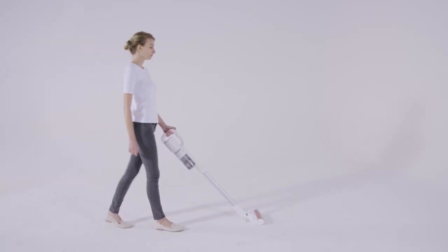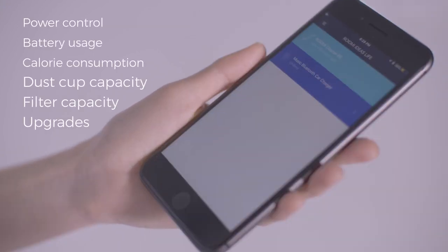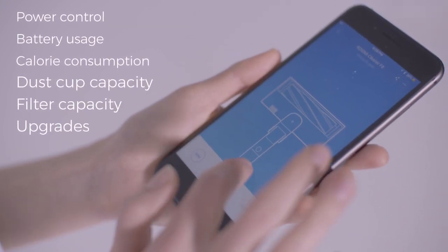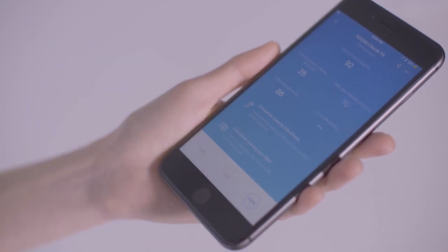With Bluetooth technology, you can connect the F8 to your smartphone, check battery usage, filter capacity and surprisingly even know how many calories you've burned off working out on the ROYDME.